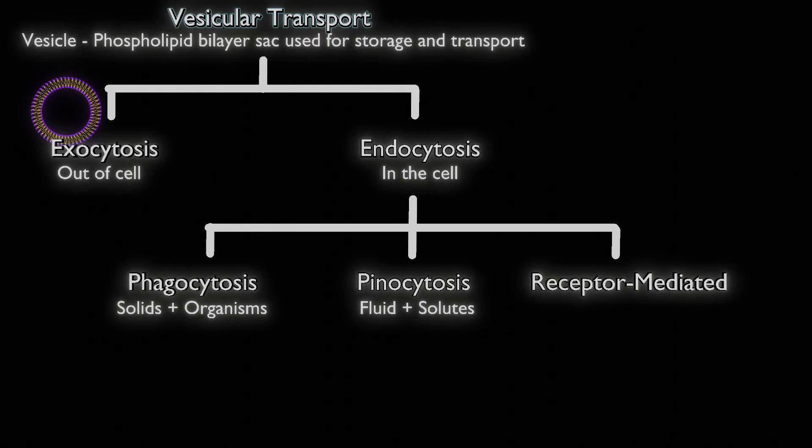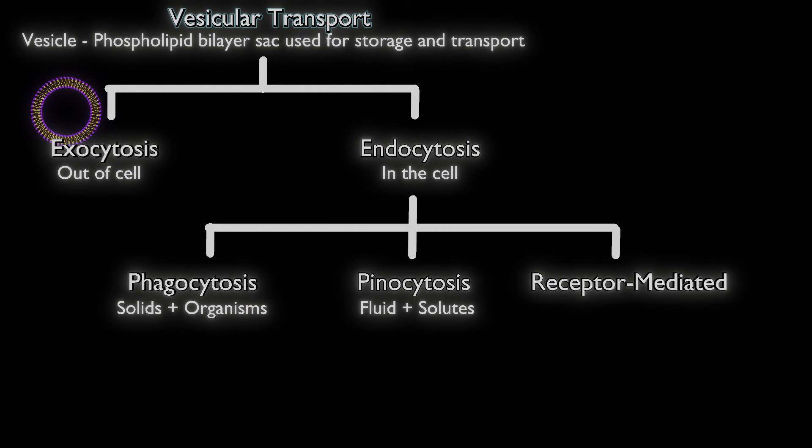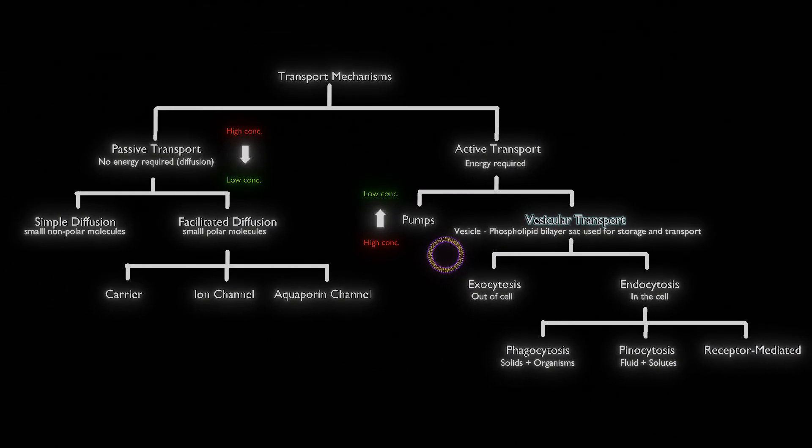Exocytosis is just the opposite. We have something from within the cell that is going to be coming out. A vesicle is moving from the endomembrane network, and we're going to be pushing, usually a secretory protein, out. That was very quick on vesicular transport.